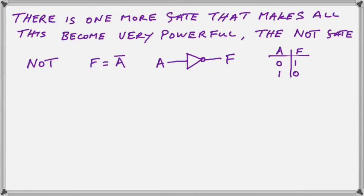Okay so we should be good to go but there's only one more gate that makes all this become so very powerful that we can actually build a house on top of it and that is the ability to reverse a state. We have the capability to turn a zero into a one or a one to a zero simply by using the NOT gate.